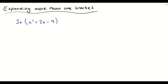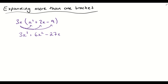For example, let's expand out 3x times (x² + 2x − 9). We multiply 3x into x², which gives us 3x³. We then expand 3x into 2x, which gives us 6x². And we expand 3x into minus 9, which gives us minus 27x. So that's the expanded version of 3x outside of this one bracket.